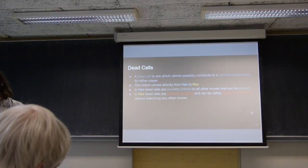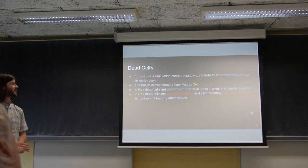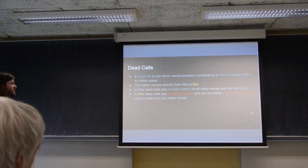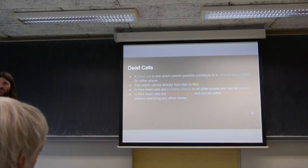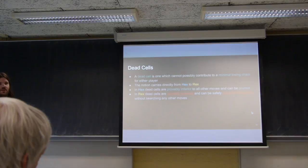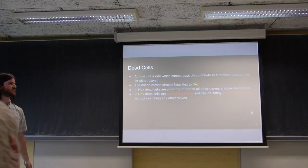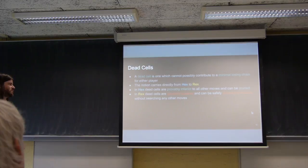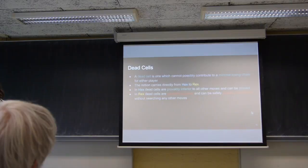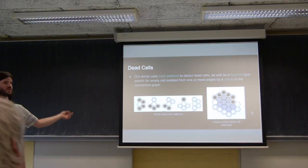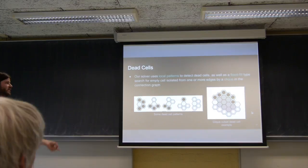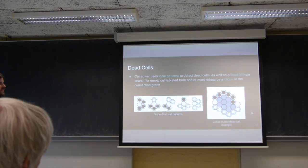Next thing we use for our solver is the notion of dead cells. So a dead cell is just one which can't possibly contribute to a minimal losing chain. We have ways to detect these. Basically the notion carries directly from hex to rex because it's more appropriate to the board geometry than anything else, not anything to do with the rules. So in hex, dead cells are provably inferior, so you can just prune them without even looking at them. In rex, they're actually provably superior, so what you want to do is play them right away knowing that that is the best move or at least equivalent to the best move on the board. And then you don't have to search any other moves. So there's just some examples of dead cells there. We basically have two mechanisms to find them. One is just these local patterns that we detect and know that the empty cell in those patterns is dead. And then the other is sort of a flood-fill type algorithm for detecting these larger groups of dead cells that are separated by chains of two colors, basically.